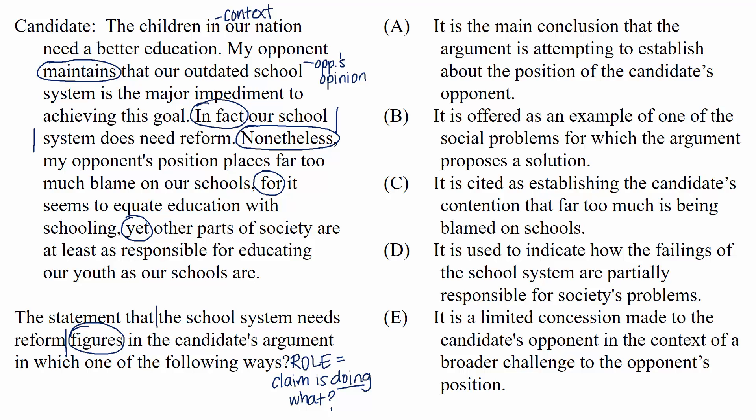The next claim is the one we're asked about: 'In fact, our school system does need reform.' That's actually in agreement with what the opponent said, making this a point of overlap between the candidate and the opponent. Because the next phrase starts with 'nonetheless,' we're finally structurally getting to the main conclusion — that the opponent's position puts too much blame on the schools — supported by the word 'for,' which signals support. So our prediction is that the claim we were asked about is a point of overlap between the candidate and the opponent.